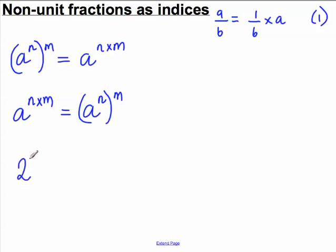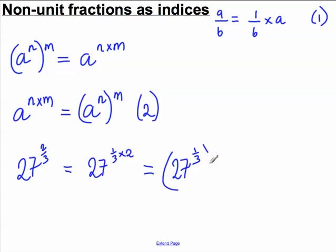So let's go back to 27 to the 2 3rds. I'm going to use this rule here and this rule up here to try and work this out. Now I can write 2 3rds as 1 3rd times 2. So 27 to the 2 3rds can be written as 27 to the 1 3rd multiplied by 2. But now I can use the power of the power rule. I can say using rule 2, this must be equal to 27 to the 1 3rd or to the power of 2.